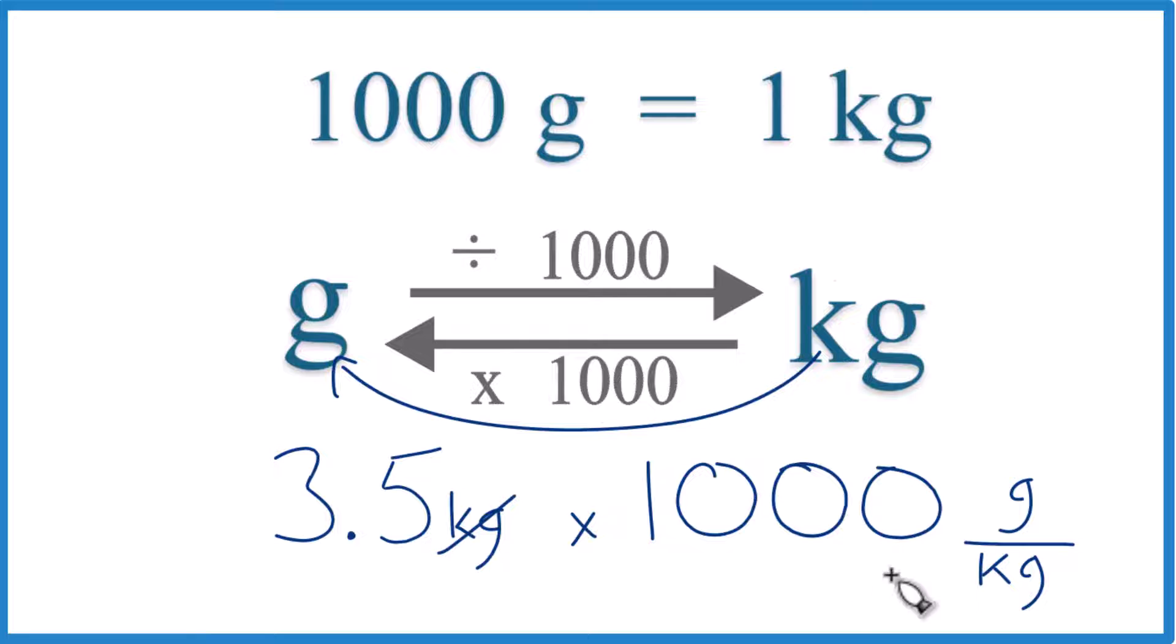When we multiply, kilograms on the top and the bottom, they cancel out. We're left with grams, and that's what we're looking for.